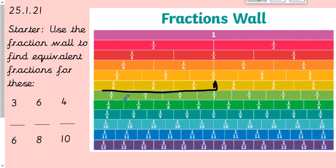Six eighths — one, two, three, four, five, six — so anything equivalent to this shape. I can see three quarters and also nine twelfths. And finally four tenths — one, two, three, four — anything equivalent to this, and I can see two fifths. Well done if you got any of those!